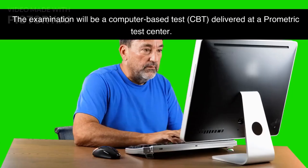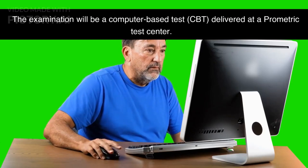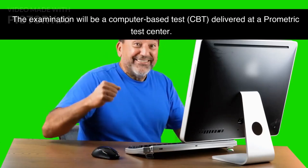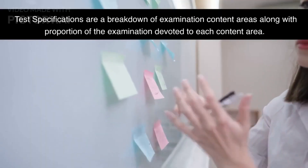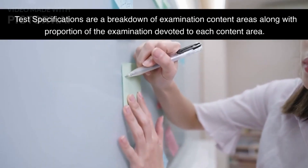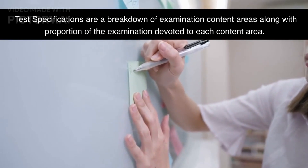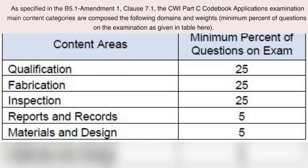Examination Delivery. The examination will be a computer-based test (CBT), delivered at a Prometric Test Center. Test Specifications are a breakdown of examination content areas along with the proportion devoted to each content area. As specified in B5.1 Amendment 1, Clause 7.1, the CWI Part C Code Book Applications Examination main content categories are composed of the following domains and weights, with the minimum percent of questions given in the table.